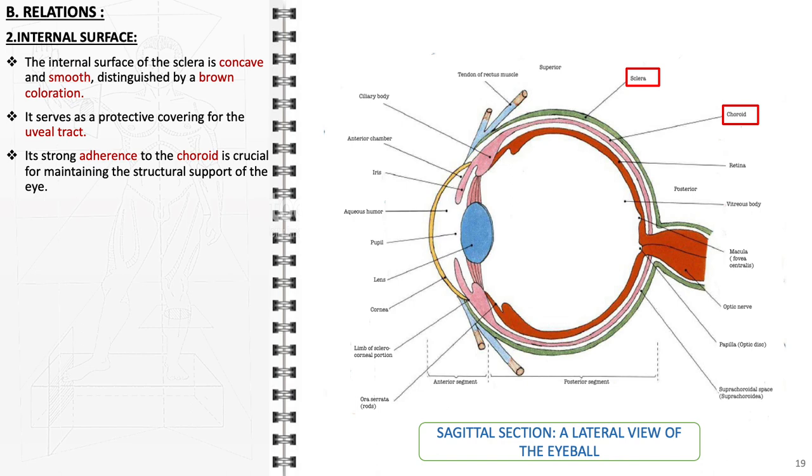The strong adherence of the sclera to the choroid is critical for maintaining the eye's structural integrity. This bonding provides the necessary support for the internal components of the eye, ensuring they remain in the correct position and function effectively.